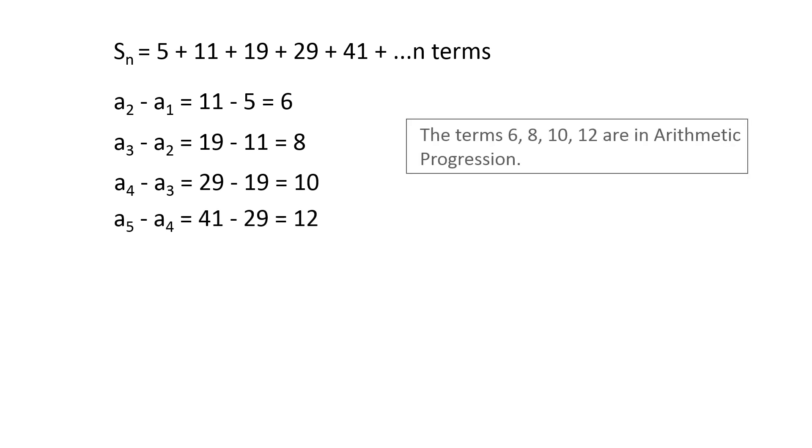Observe that the difference between the consecutive terms in this series is an arithmetic progression. Therefore, the difference between nth term and n minus 1th term is equal to n minus 1th term in the sequence 6, 8, 10, 12, and so on.